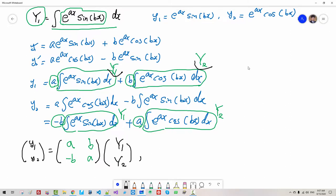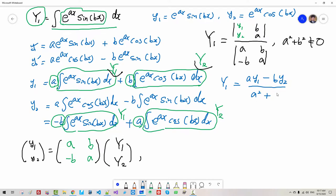Then using Kramer's rule, y₁ equals the determinant of this part A, B, minus B, A, where this determinant A² + B² should not be 0. So y₁ equals (A·y₁ - B·y₂)/(A² + B²).